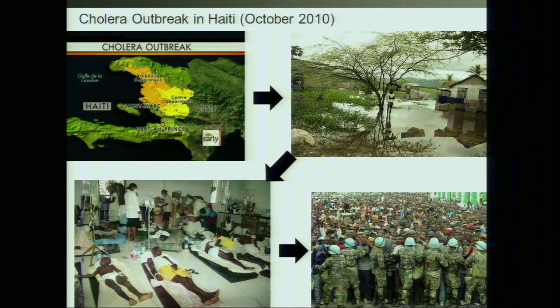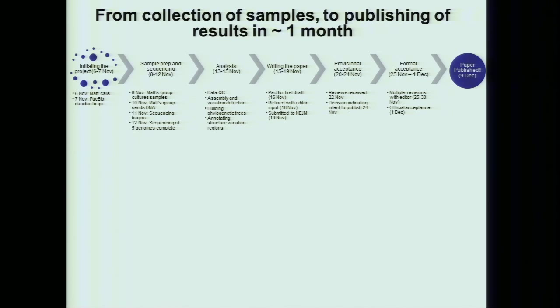We applied this to cholera in Haiti. You might remember Haiti in 2010 had an earthquake followed by a cholera outbreak — many people killed, and there was lots of discussion about where it came from. Was it brought from afar? Did it emerge from the waters of Haiti? We were able to get samples from Haiti with Matt Walder at Harvard, and the next day we had the entire genome of the cholera bug sequenced, along with five other strains from different geographic regions. We analyzed the data, wrote a paper, and had it submitted to the New England Journal — and three to four weeks after collecting samples, we had a paper online.